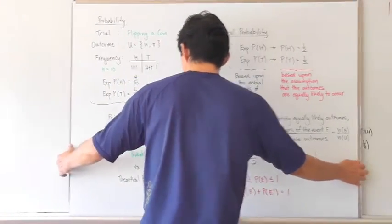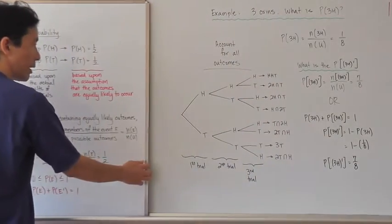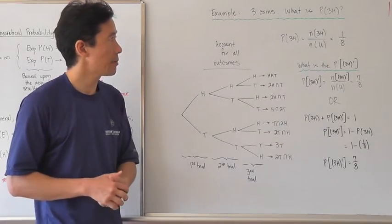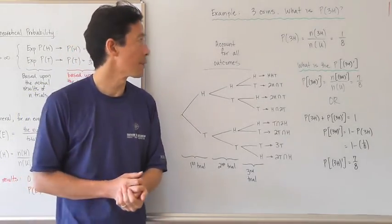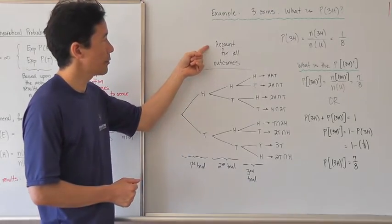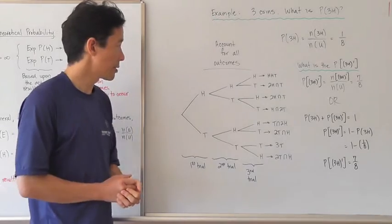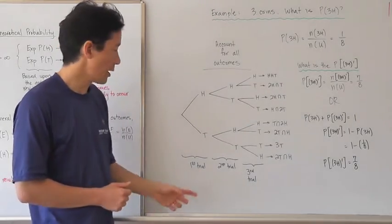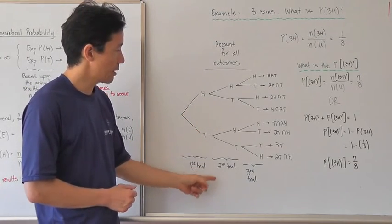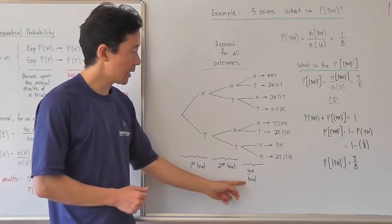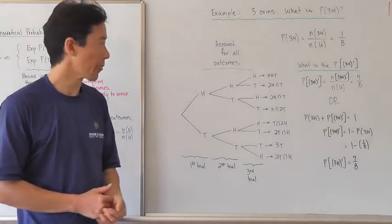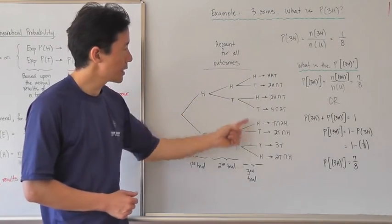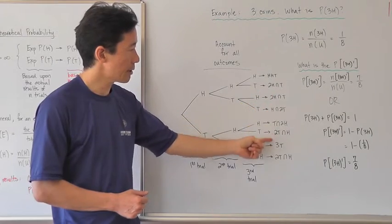Let's put this in context of a particular problem. Say we have three coins and we want to determine the probability of getting three heads. When it comes to probability we have to account for all the outcomes, so we'll use a tree diagram. Here's the first trial — flipping the coin. Here's the second trial — flipping the coin again. And the third trial — flipping the coin a third time. By following the paths along the branches we can come up with all the possible outcomes.